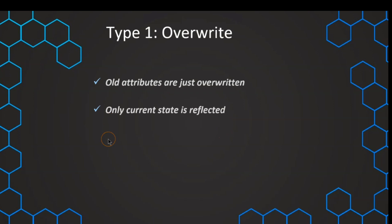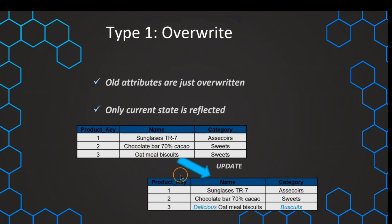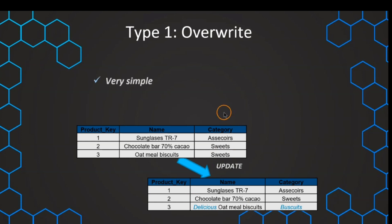In that case, we have only the current state reflected in our dimension table. For example, if we have a product table and some of the names of the products are changing — for example, oatmeal biscuits is changing to delicious oatmeal biscuits — we just update this value and we then have only this updated table. This can also be the case if the category changes; we can just update the value and we have this new updated table.